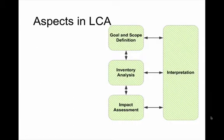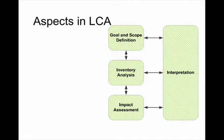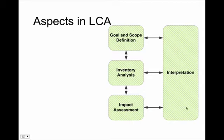The LCA contains a few different parts. Goal and scope definition is basically what about your product you're really looking at, what aspects and where you want to get the information. Inventory analysis is really what goes into the product and what goes into the stuff that goes into your product. The impact assessment is what aspects of the inventory can cause a problem with the environment. Interpretation is really looking at how the data is compiled and what it actually means — we're not going to get into this for the course, but it is an important part when you take the next step.